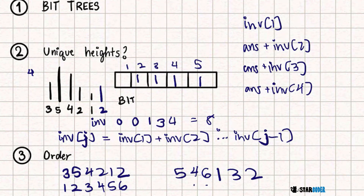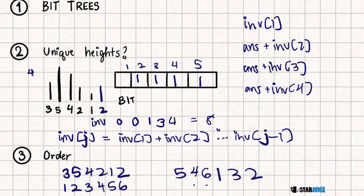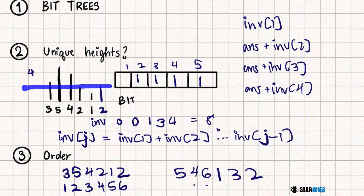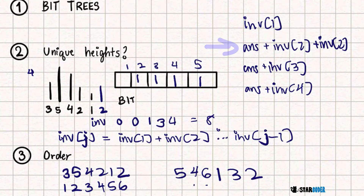Once we have this order, we keep two pointers. As we loop through j in a for loop, we also loop through another pointer i. This i loops through the order indexes using a while loop. The while loop keeps going while the current hair's height is less than or equal to j, handling all duplicates. When we have two duplicates of height 2, instead of just adding INV[2] once, we add all instances of INV[2]. At every stage, we add all inverses for the current height value.